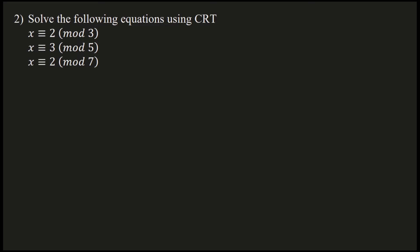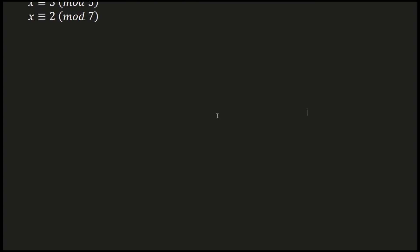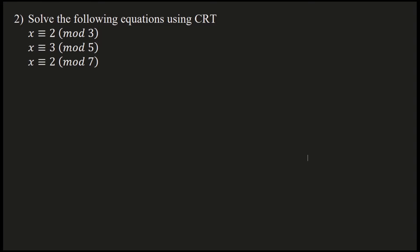We need to find the solution. By data, what are we given with? x is our variable, we need to find this only. So these are a1, a2, a3, and here m1, m2, m3 are 3, 5, 7.